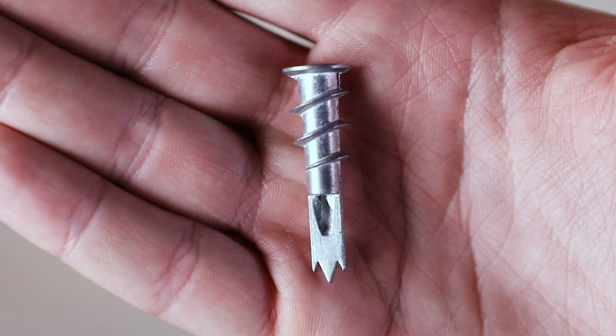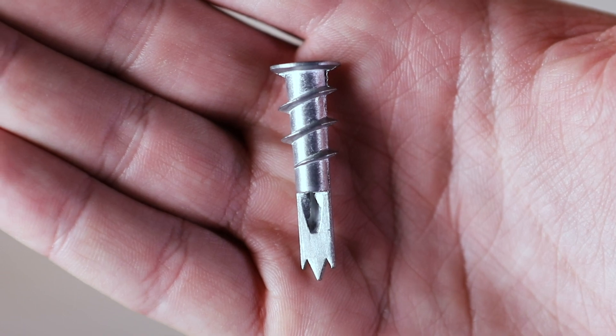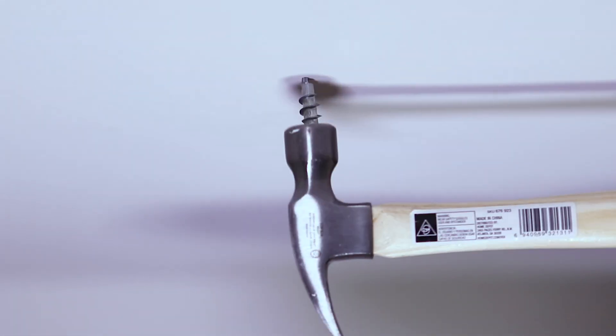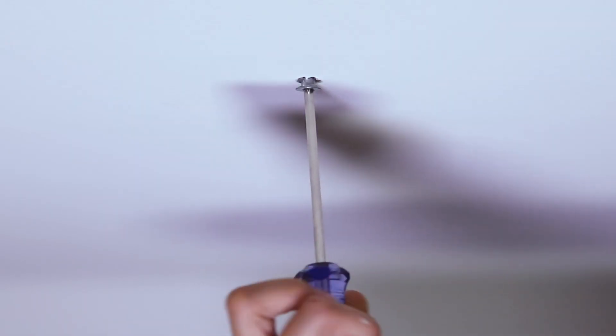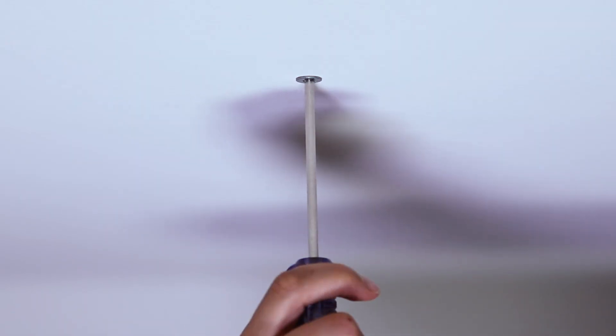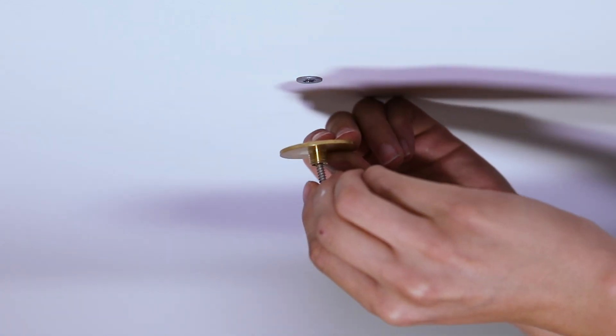When mounting the Swag Hooks on drywall, please be sure to use the included anchor. Hammer the anchor into your ceiling or wall until it reaches the threaded portion of the anchor. Then with a screwdriver, twist the rest of the anchor into your ceiling or wall. The anchor should be flush with the surface.